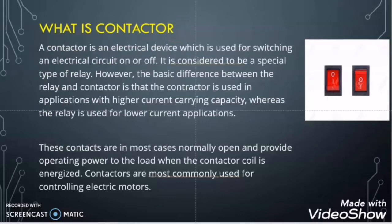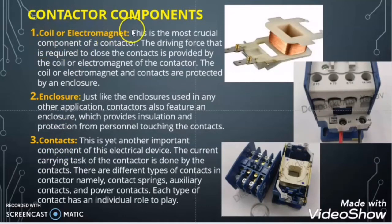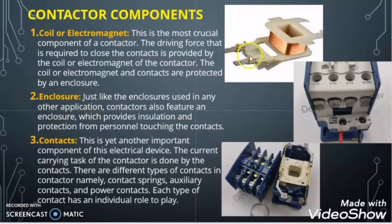Now let us study what are the major components of the contactor. There are three major components. The first one is the coil or electromagnet, the second one is the enclosure, and the third one is the contacts. The coil or electromagnet gives the driving force to the moving contact to close with the fixed contact. The enclosure accommodates the coil, the contacts, the spring, and other parts.